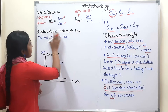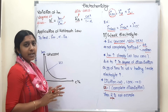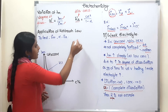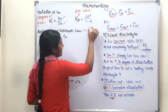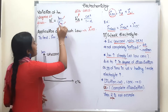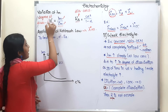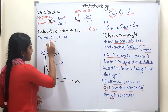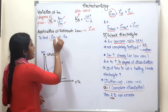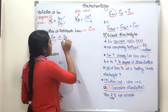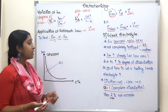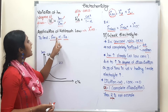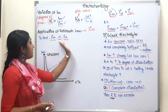Next, the application of Kohlrausch's Law. We apply lambda naught m obtained from Kohlrausch's Law to calculate alpha (degree of dissociation). From alpha, we can calculate Ka (dissociation constant). So, the application covers three values: limiting molar conductivity, degree of dissociation, and dissociation constant.